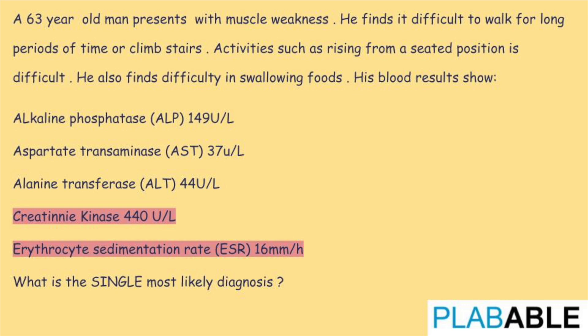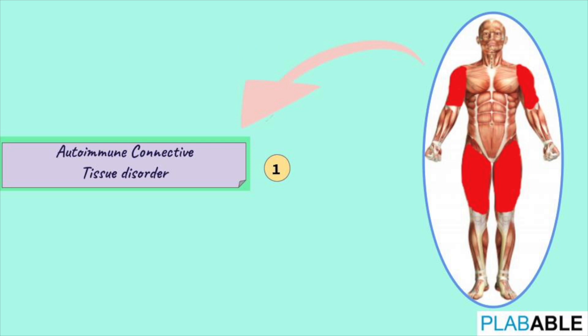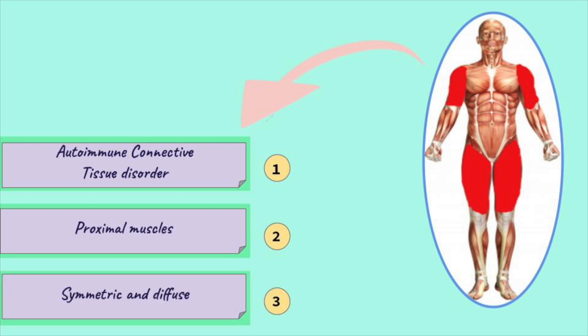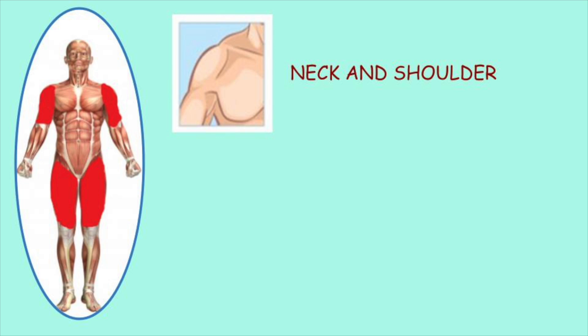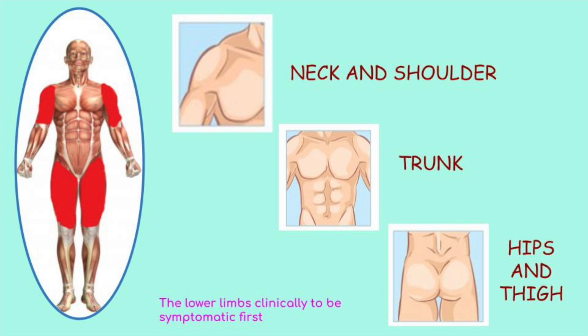A 63-year-old man presents with muscle weakness. He finds it difficult to walk for long periods of time or climb stairs. Activities such as rising from a seated position are difficult, and he also finds difficulty in swallowing foods. After looking at this description and the investigatory findings, this man is a patient of polymyositis — an autoimmune connective tissue disease characterized by inflammation and weakness of muscles, usually symmetric and diffuse, primarily affecting the proximal muscles of the neck, shoulder, trunk, hips, and thigh, with the lower limbs typically symptomatic first.